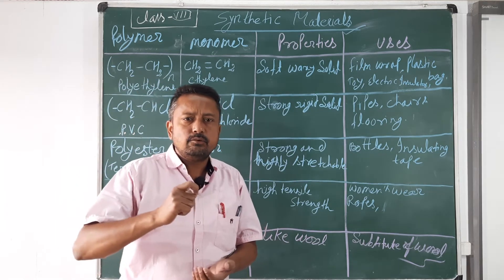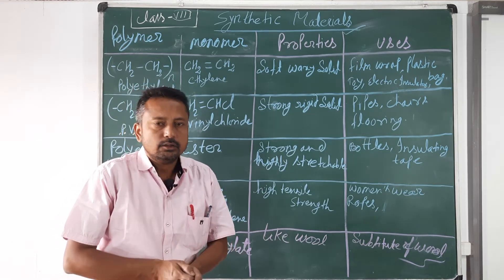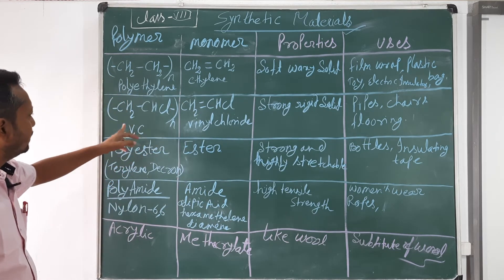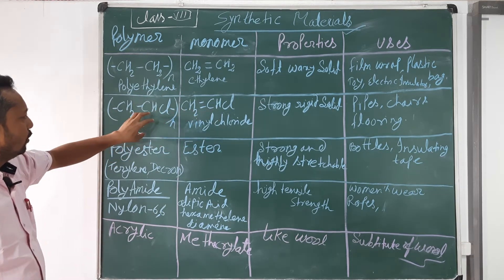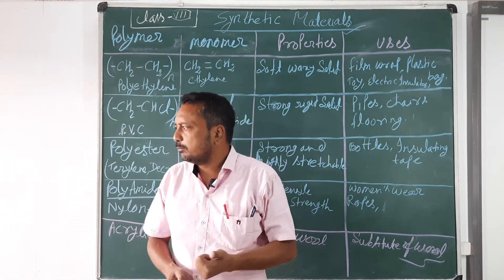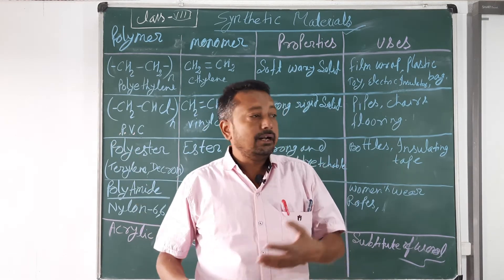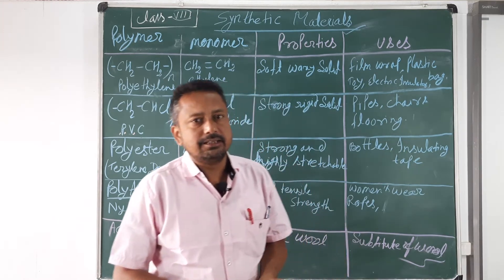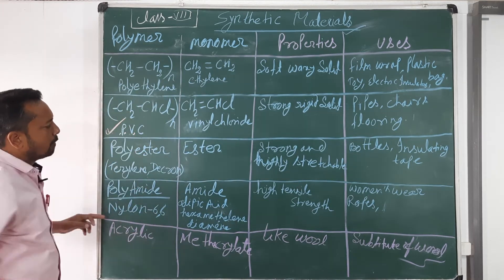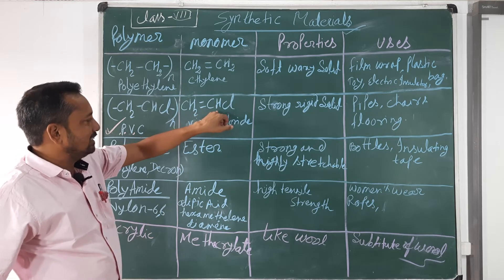PVC, or polyvinyl chloride, is not just ordinary plastic — its melting point is much higher, so it does not combust easily. It is strong and rigid, used in pipes, chairs, flooring materials, doors, and windows. Today, we use hard plastics for many things, even big tables, and in that manufacturing, PVC — polyvinyl chloride — is used. Its monomer is vinyl chloride, CH2=CHCl.